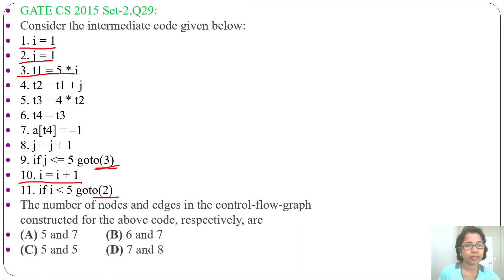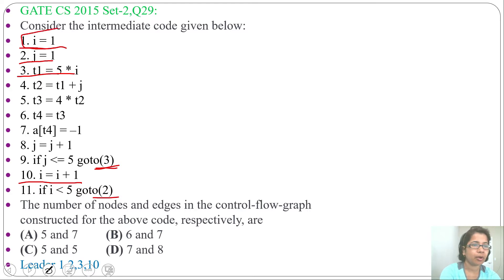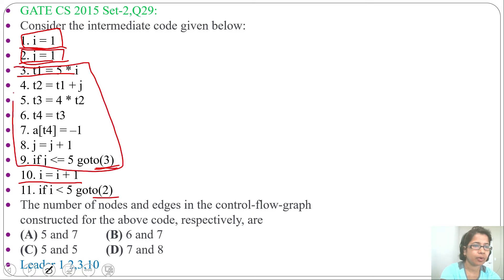We found four leaders: statement 1, statement 2, statement 3, and statement 10. Four leaders means there will be four blocks. Statement 1 is one block, statement 2 is one block, statement 3 through statement 9 is one block, and statements 10 and 11 form another block.